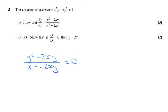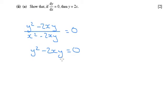Now when a fraction equals 0, that's when the numerator equals 0. So we can ignore the bottom and just say that y squared minus 2xy needs to equal 0.